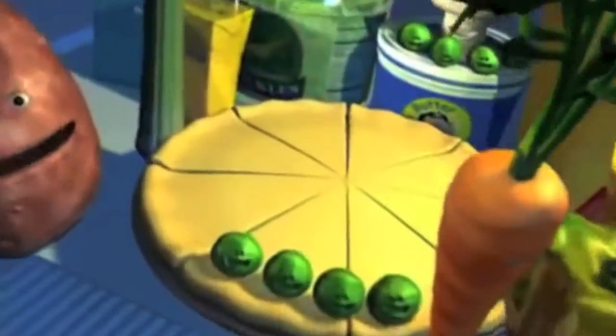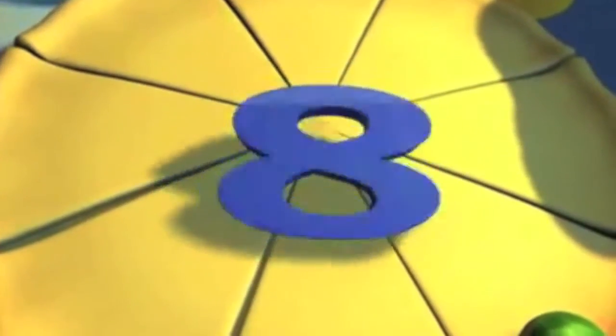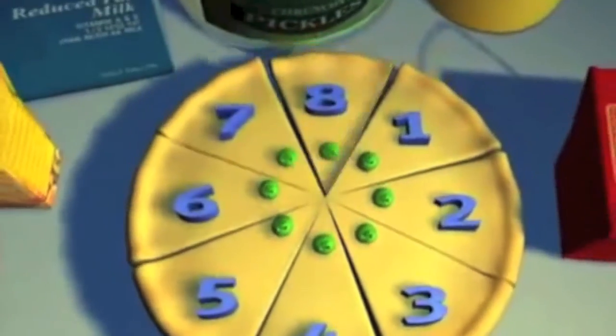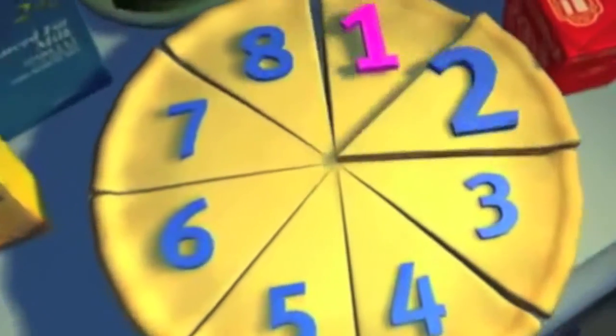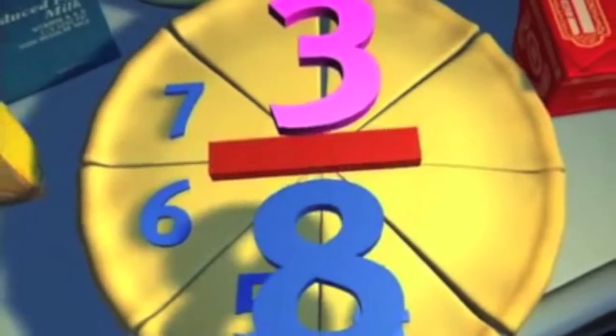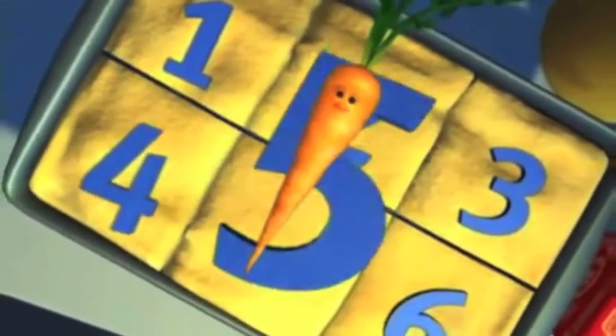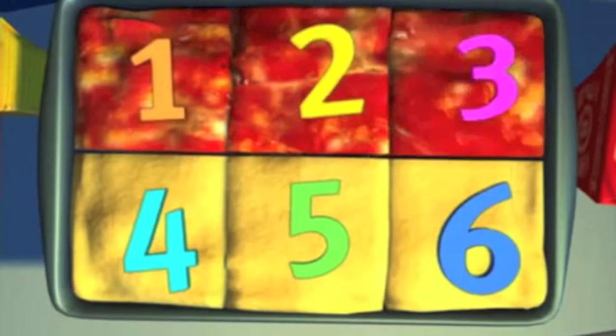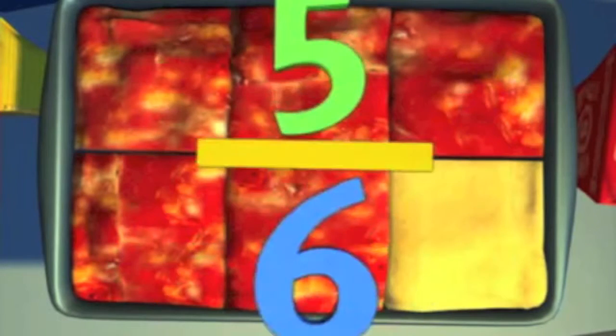Count how many equal parts there are. That number goes below the bar. Count the ones you need, then stop, and write that number up on top. That's the numerator. We're using fractions.